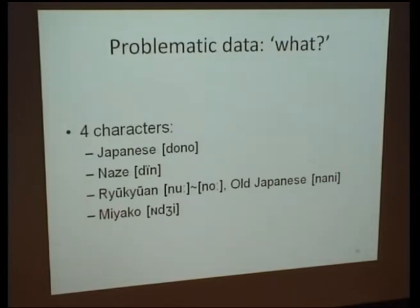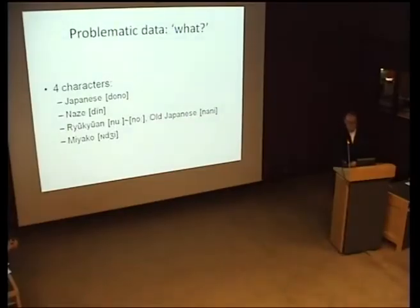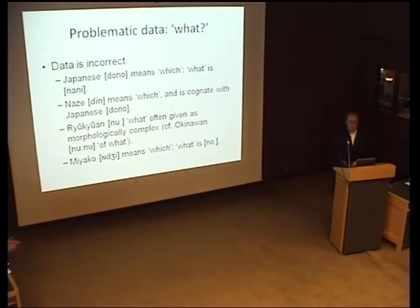I want to move on to why we're not finding what we'd expect from the traditional historical linguistics view of Japonic languages. There is quite a bit of problematic data. To give one example: the word for 'what.' In Japanese we find 'dono,' in Nase (one of the two North Ryukyuan varieties) 'rin,' in Ryukyuan 'nu' or 'no,' in Old Japanese 'nani,' and in Miyako 'in ji' — those are the four separate characters. The data is simply incorrect. The Japanese word 'dono' does not mean 'what' — it means 'which.' Exactly 49 varieties have this incorrect coding.